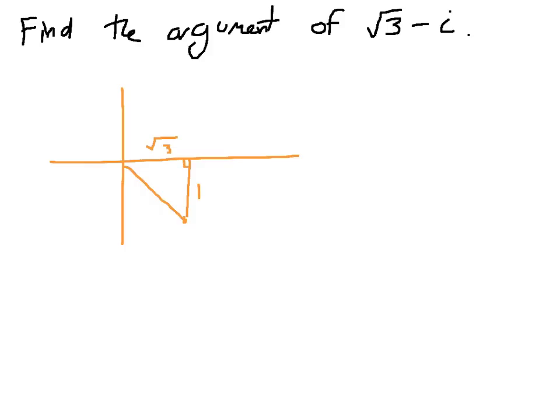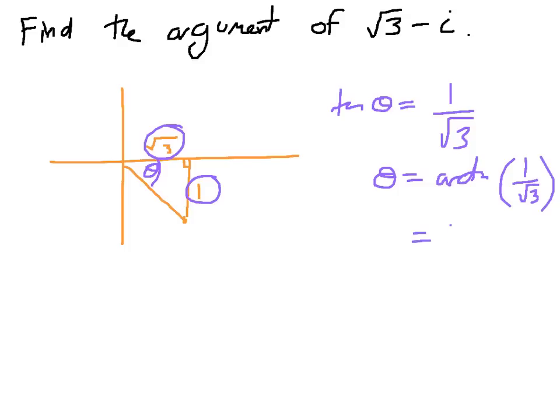If I simply perform a bit of trigonometry to find this angle theta, then I see that the tangent of theta equals the opposite over the adjacent, so 1 upon root 3. Theta equals the arc tangent of 1 upon root 3, which equals pi upon 6. But that's not the argument. Why is that not the argument? Have a think to yourself. You probably know already, and you're just doing a little bit of extra revision.